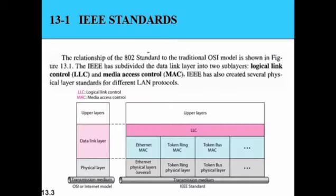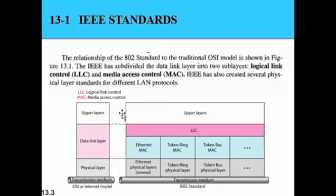The relationship of the 802 standard to the traditional OSI model is shown here. IEEE subdivided the data link layer into two sub-layers: LLC (Logical Link Control) and MAC (Media Access Control). It also created several physical layer standards for different local area network protocols. So the data link layer is subdivided into the MAC and LLC sub-layers.